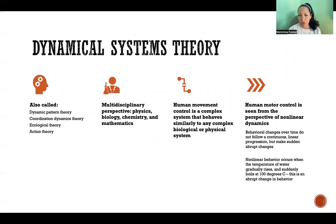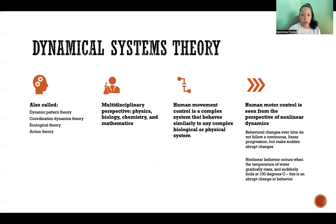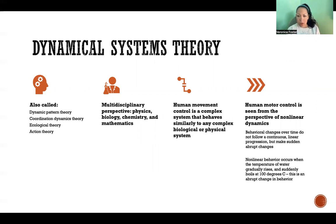Human movement control is a complex system that behaves similarly to any complex biological or physical system. So we can make a lot of comparisons between human movement control and a lot of other physical phenomena that help us understand how things work in motor control. Human motor control is seen from the perspective of non-linear dynamics. Non-linear behavior occurs when, for example, the temperature of water gradually rises and suddenly boils at 100 degrees Celsius.